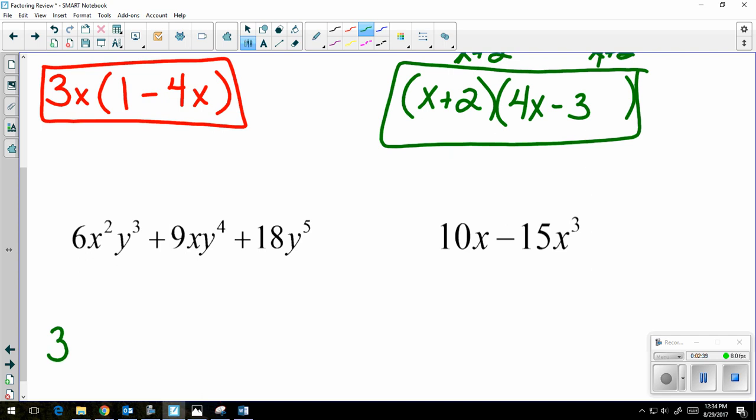If I take a look at each of my pieces, they do not all have an x, so I cannot have x as part of my GCF, but they all have a y. And in fact, they all have a y cubed. So my GCF is going to be 3y cubed. Open up my set of parentheses.